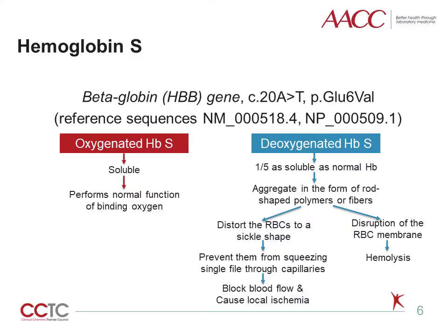These molecular rods distort the erythrocytes into a sickle shape that prevents them from squeezing single file through capillaries, thereby blocking blood flow and causing local ischemia. They may also cause disruption of the red cell membrane — hemolysis — and the release of free hemoglobin, which can have adverse effects on the availability of vasodilators such as nitric oxide, thereby exacerbating the ischemia.